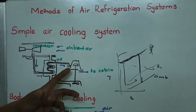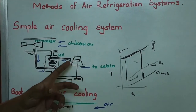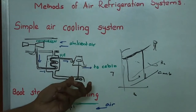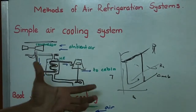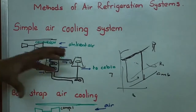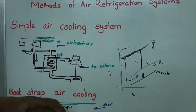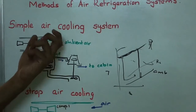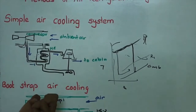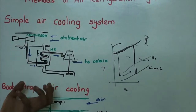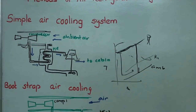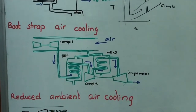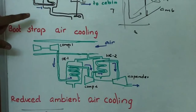The expanded air is then supplied to the cabin at cabin temperature. Since the expander is a turbine, when air expands we get work output, and this work output is used to run a fan. That fan drives the ambient air so that cooling is achieved in the heat exchanger.